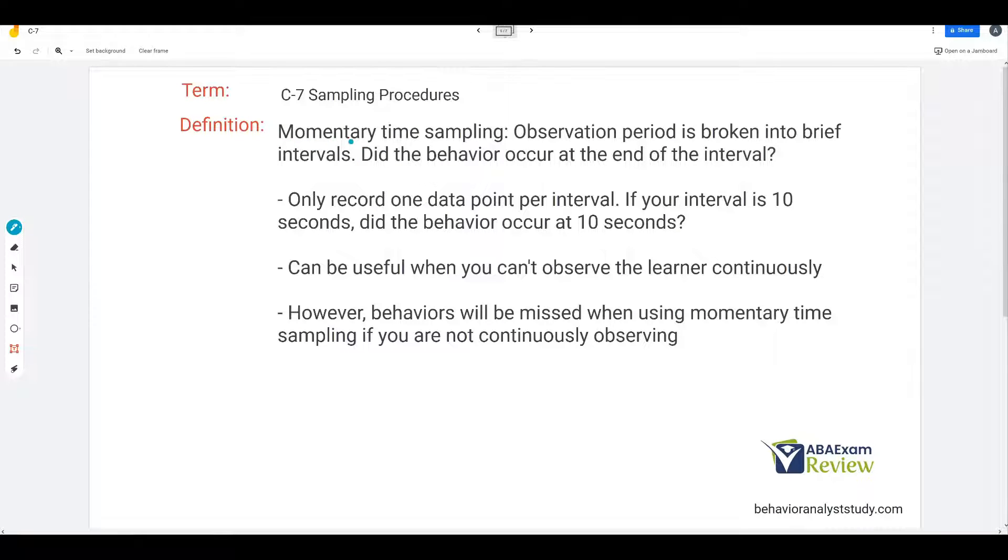And then momentary time sampling. Again, the observation period is broken into brief intervals. Did the behavior occur at the end of the interval? For example, say we have one to 10 seconds. We're worried about right here. 11 to 20, we're worried about right here. 21 to 30, we're worried about right here. We're worried about the end, the last part of the interval, the very final moment of the interval. Is the behavior occurring? Is it not? We're still only recording one data point per interval. Very important to remember for sampling. One data point per interval.